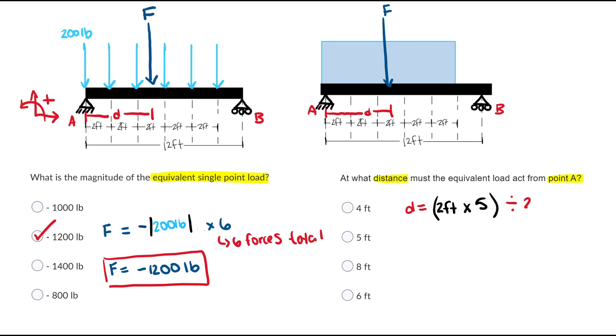D is equal to two feet times five because there are five of the two feet under our loading. Then we'll divide that by two to get half the distance because we are dealing with a rectangle as shown above. So our distance D is equal to five feet. Making this the correct answer.